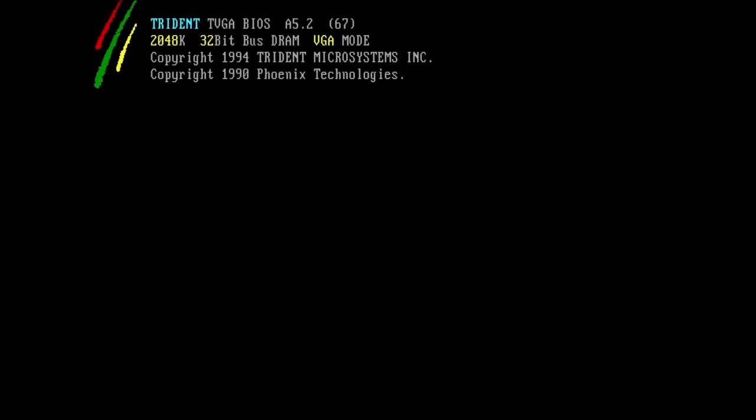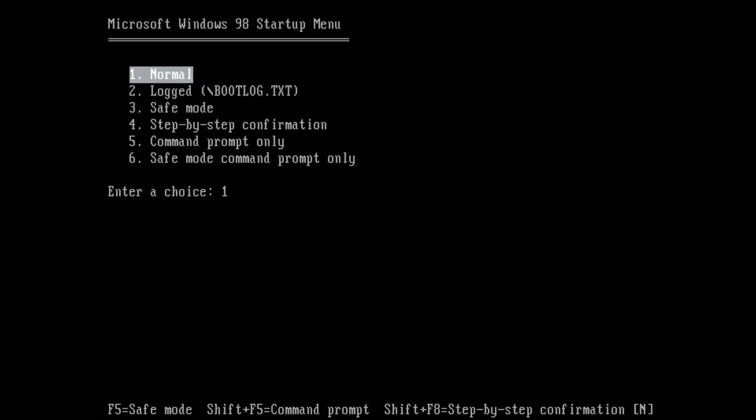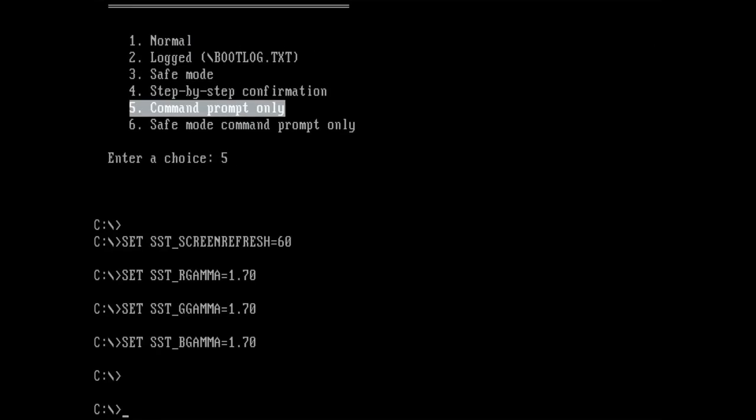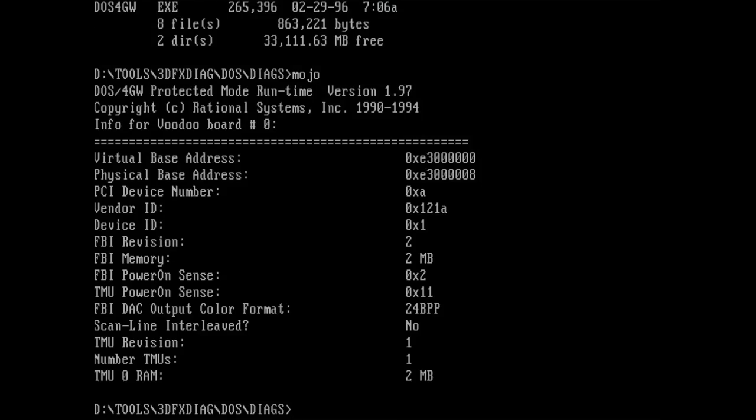And we get a picture, which is encouraging, but by no means an indicator that the card is working. At the moment, we use the primary video card only, which is generating the video signal. The Voodoo card passes the signal through to the monitor. Let's see what the 3dfx diagnostic application Mojo has to say. And the tool reports a Voodoo board with everything that we would expect. That's great news! So far, the card seems to be working. But to know for sure, we have to let it render some 3D scenes.